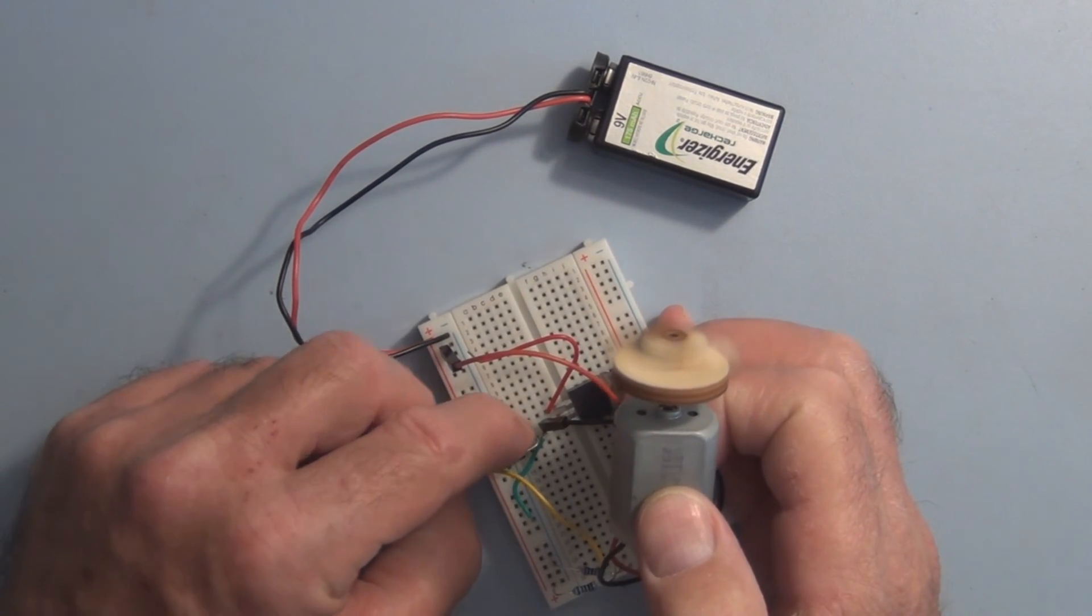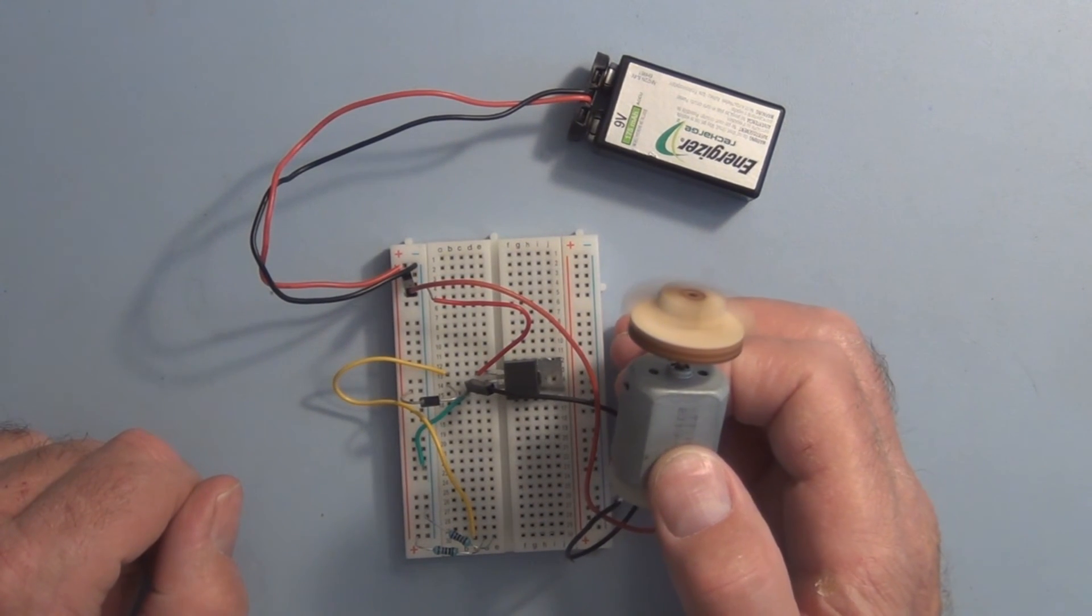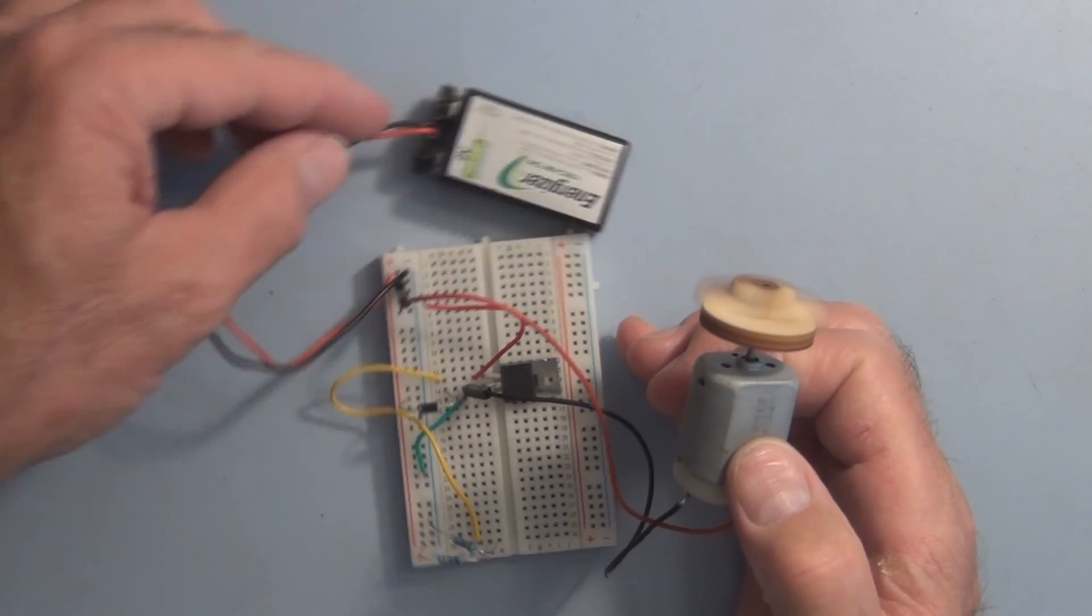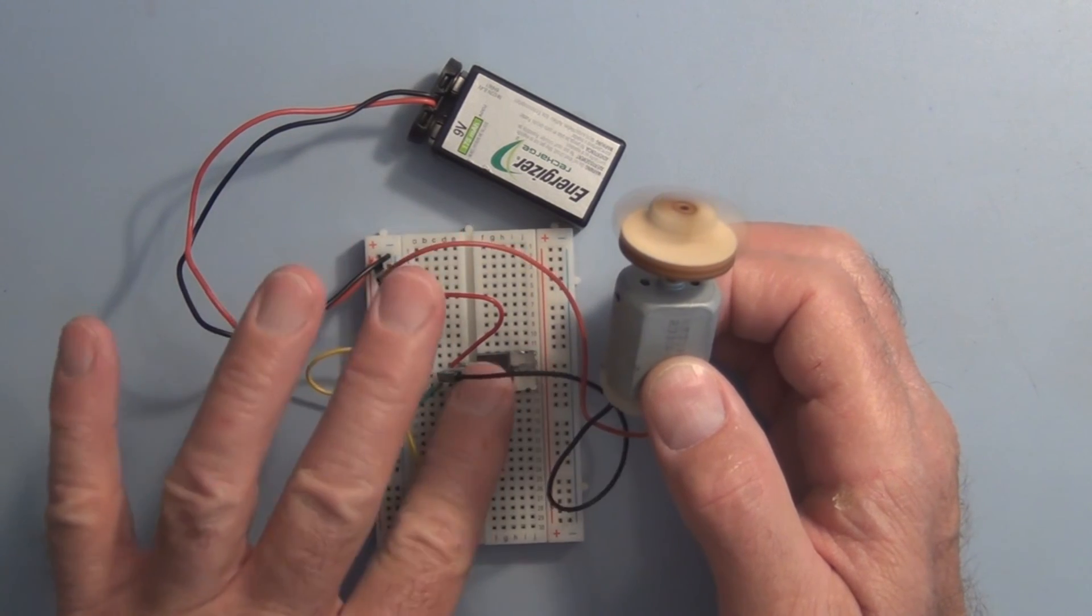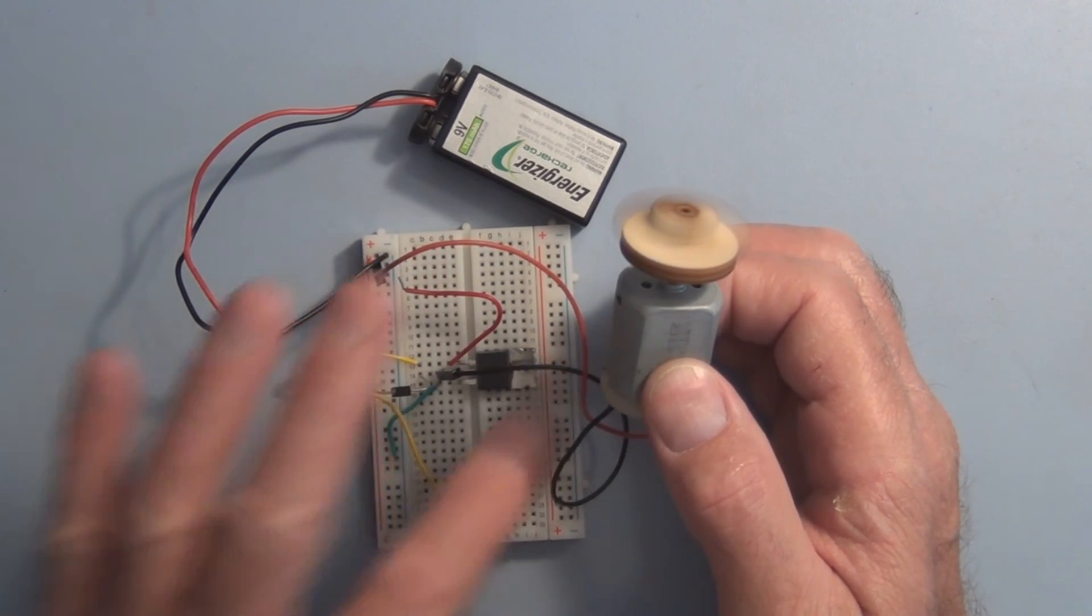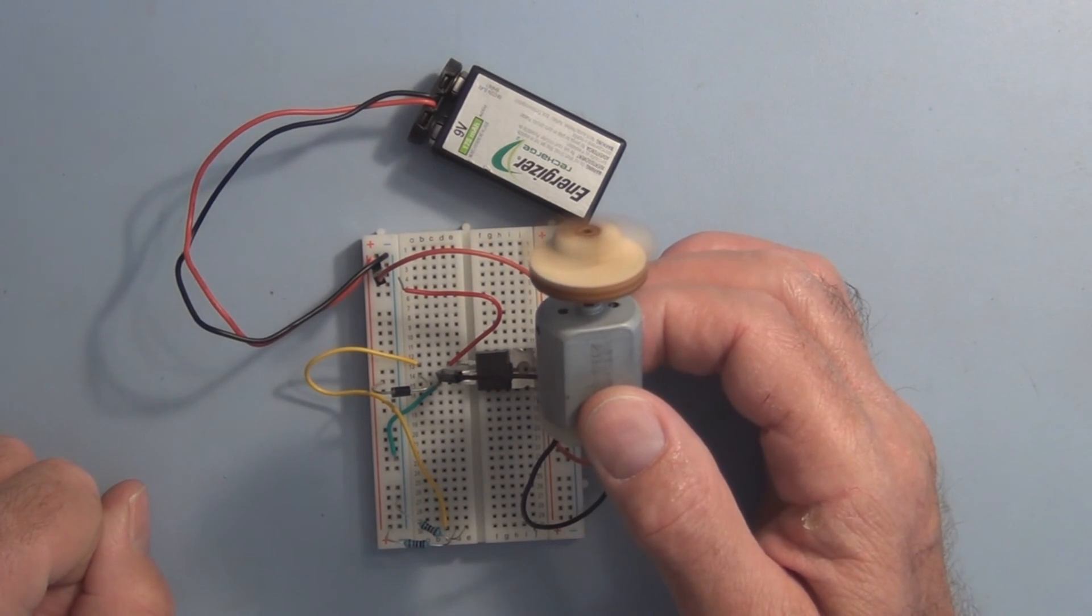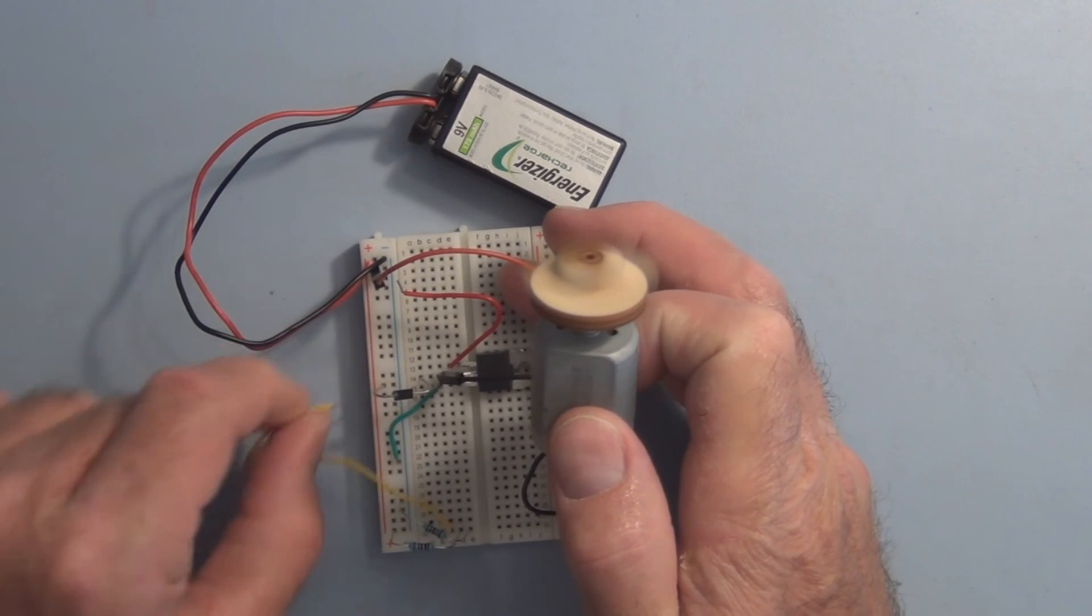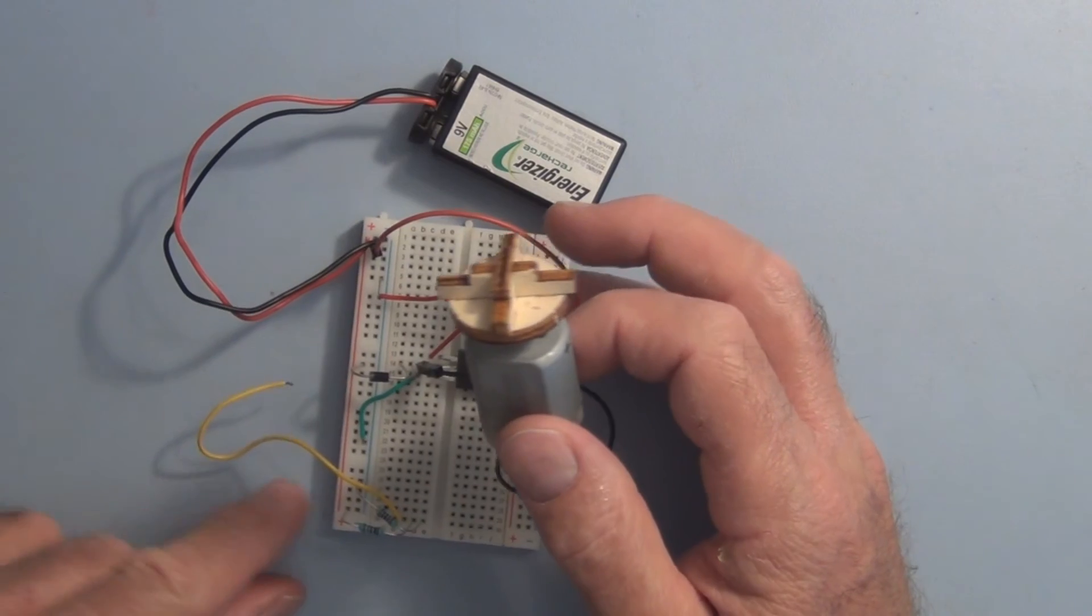So if I put the 5 volts on here, well it's 4.5 volts because it's a voltage divider dividing the 9 volts. That's on. There's no ambiguity. There's a constant 4.5 volts on that gate. And if I then ground it, it's off.